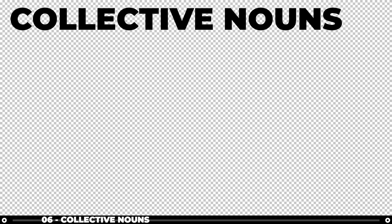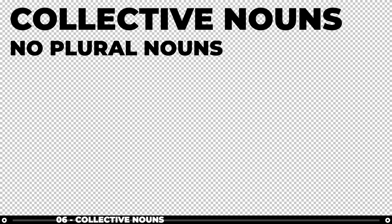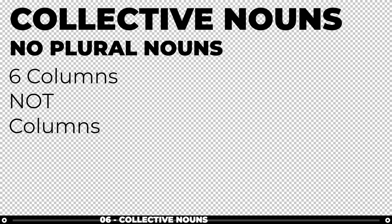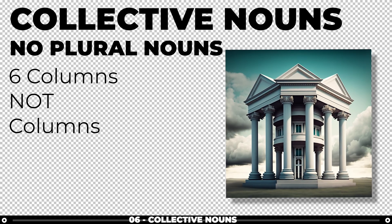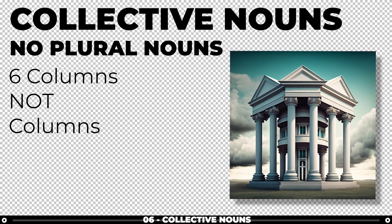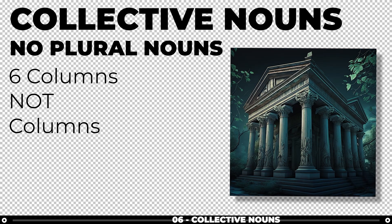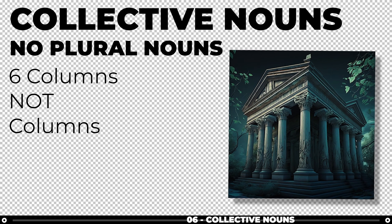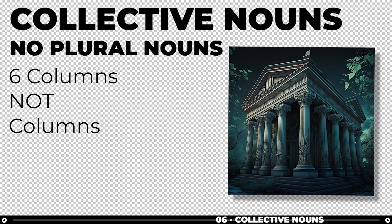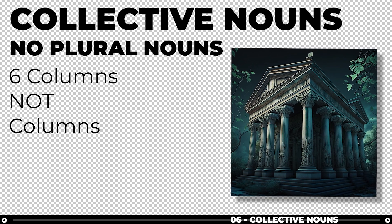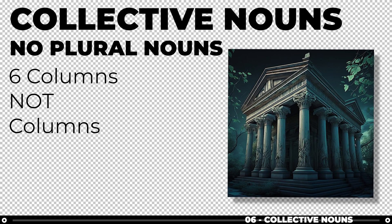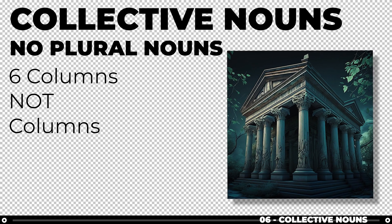Collective nouns: Try not to use plural words, and instead use collective nouns. If you want six columns, say six columns, not just columns plural. Midjourney has an easier time interpreting the scale and the look you are going for if you have a definitive number of elements.